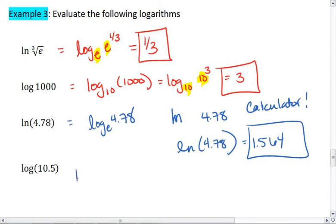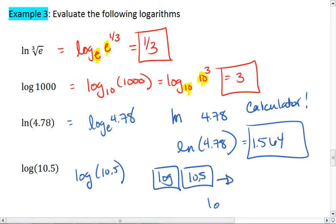Then we have log of 10.5. Again, this isn't an easy one to calculate by hand, so we're going to plug into our calculator. We do have a log button on your calculator. Type in log. Again, you'll automatically get parentheses. Type in 10.5. We end up with log of 10.5 is approximately 1.021.